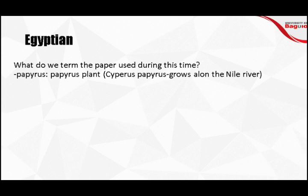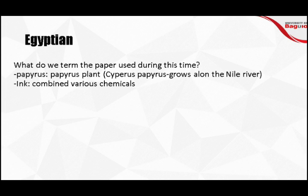Paper alone is not complete without ink. Egyptians also came up with a type of ink made from a combination of various chemicals. Although the specific chemicals are not identified in study, it is described as a combination of different chemicals used for writing on papyrus. They used ink and papyrus for writing history, culture, laws, and policies of Egyptian society during the ancient time.